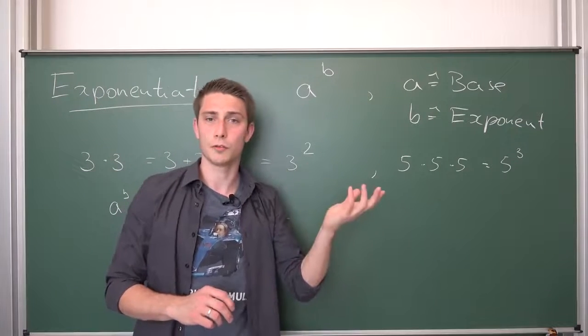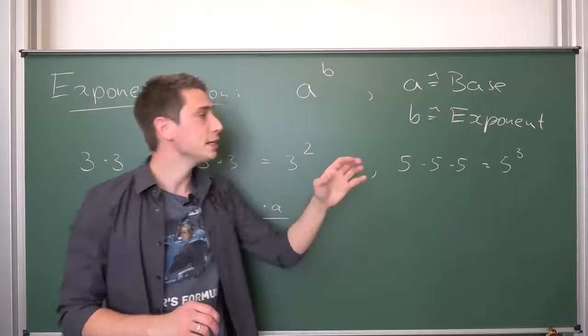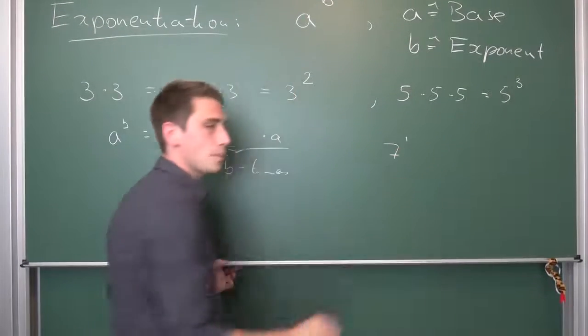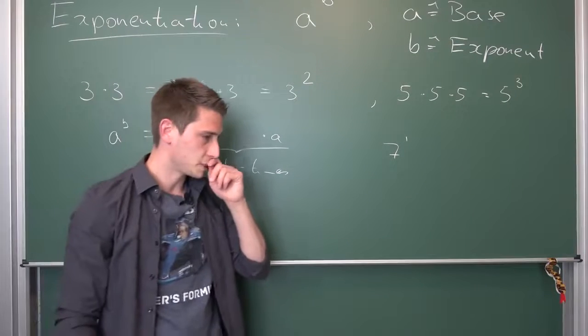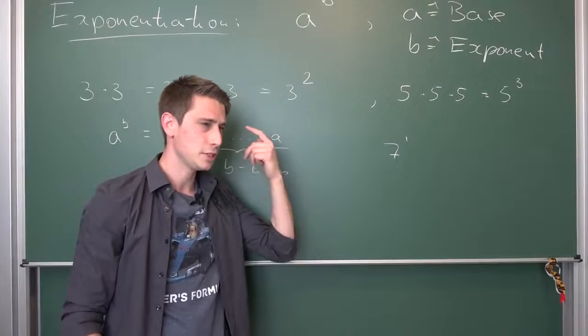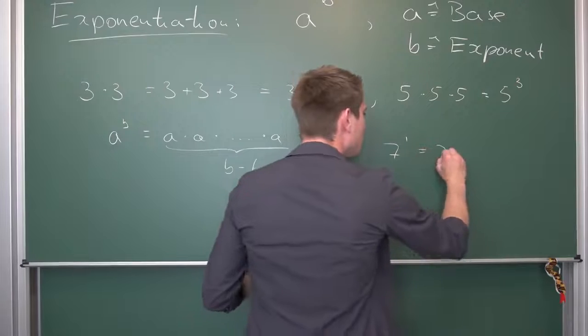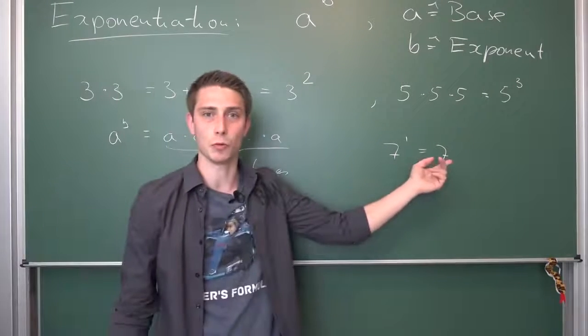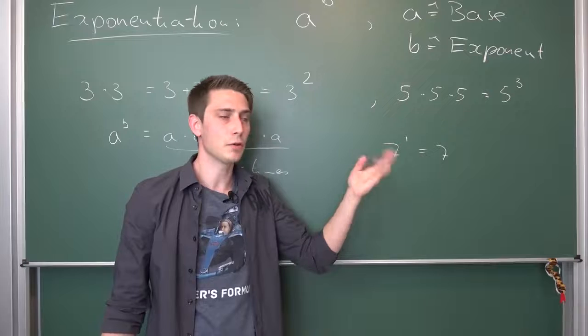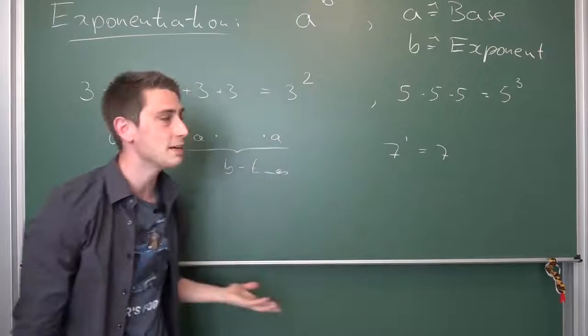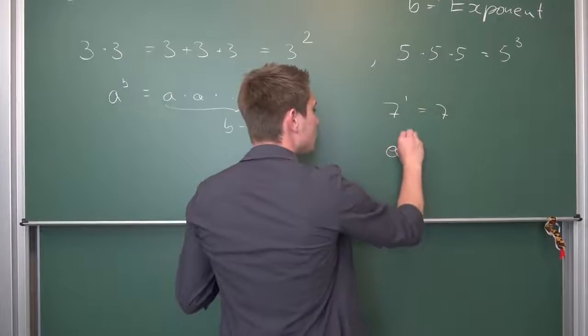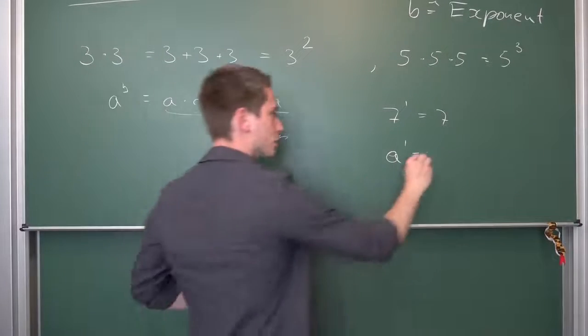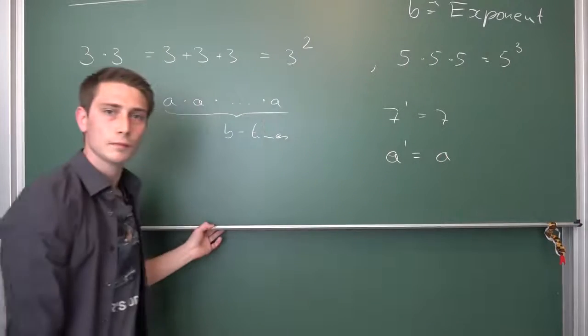But one other definition, which a lot of students struggle with, immediately follows from this natural number definition. Namely, for example, 7 to the 1st power. 7 to the 1st power is, well, let's think about the definition. This is 7 multiplied with itself 1 times. Well, this is just 7, right? 7 multiplied with itself only one time is just 7 in itself. So we can derive a rule here. a to the 1st power is thus a multiplied with itself only once. So this is just a.